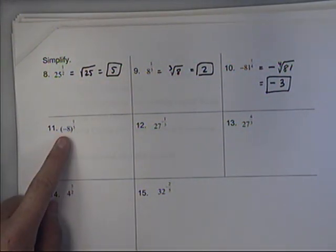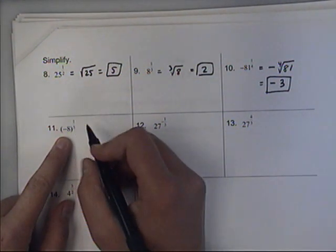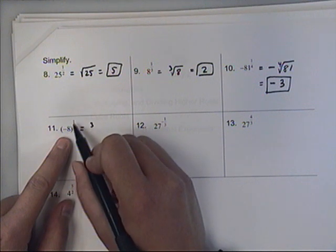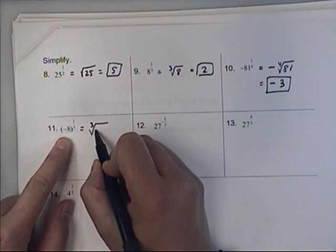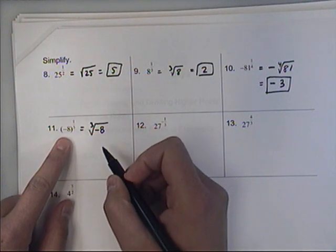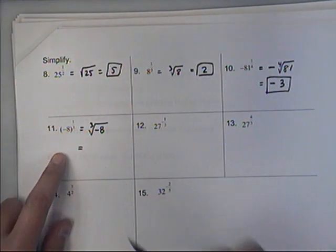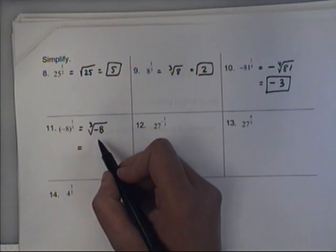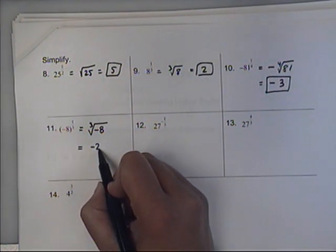If the negative is inside parentheses, that's different. Inside the parentheses means we have to keep it inside the root. So 1 third is the cube root, but it's going to be the cube root of a negative 8. Now, while we cannot take the square root of negative numbers, we can take the cube root of negative numbers. Because a negative times a negative times a negative is another negative. So what number times itself times itself is negative 8? The answer is negative 2.